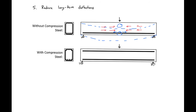If we have compression steel in our section, the beam will still want to shrink and creep, but the reinforcement at both the bottom and the top will resist these effects. We will still have downward deflections caused by loading, but they won't be as significant as without compression steel. ACI has a method to account for this benefit of compression steel, which we'll look at in later videos. Thank you very much.